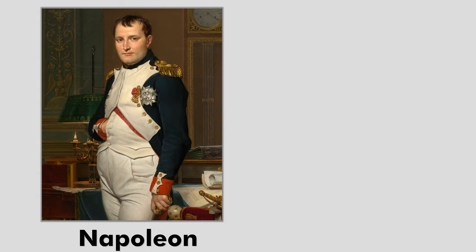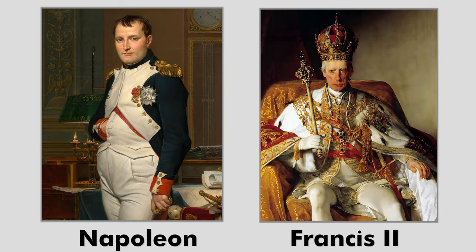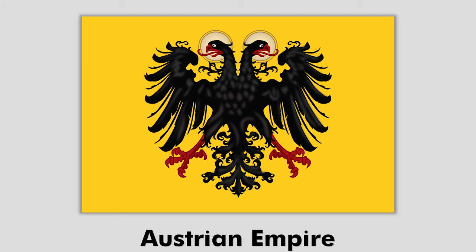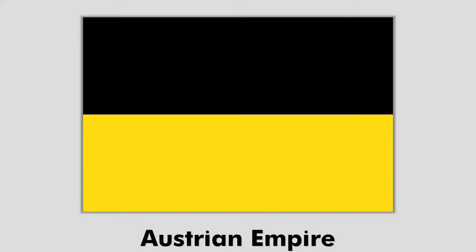In 1804, Napoleon Bonaparte declared the first French Empire. In response to this, Emperor Francis II of the Habsburg dynasty declared his personal domain to be the Austrian Empire and became France's first Emperor of Austria. Taking the colors of the banner of the Holy Roman Emperor, the flag of the Austrian Empire was black and gold.